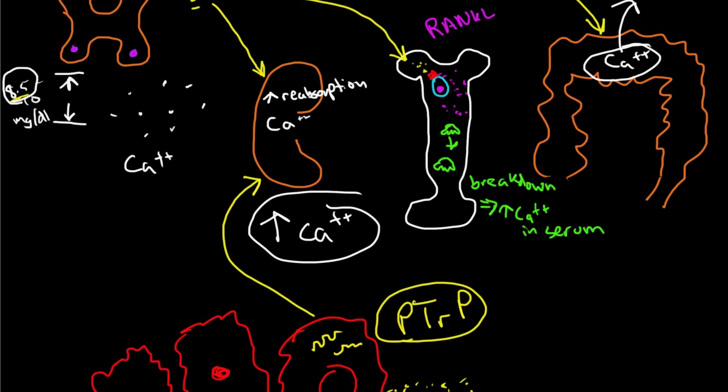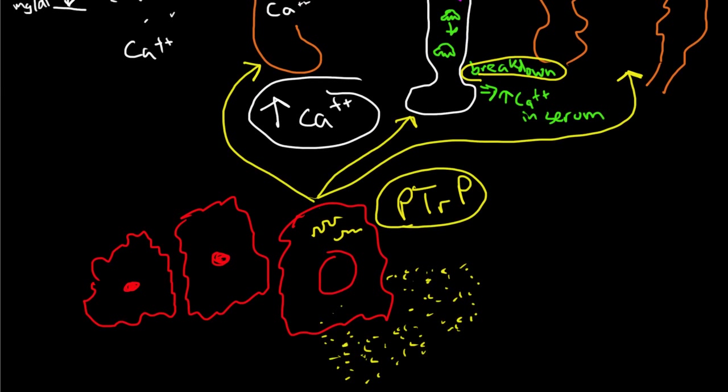What does parathyroid-related protein do? It does the same thing. The receptors can't distinguish the source of the polypeptide. It's causing the same effects that parathyroid hormone is: increasing reabsorption of calcium, increasing the breakdown of bone and release of stored calcium into the serum, and increasing absorption of calcium from the gut. This is all due to a significant genetic mutation creating a polypeptide mimicking parathyroid hormone.